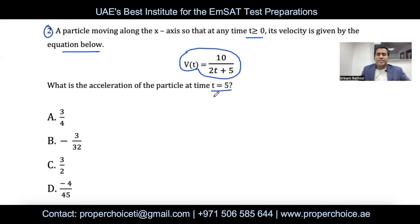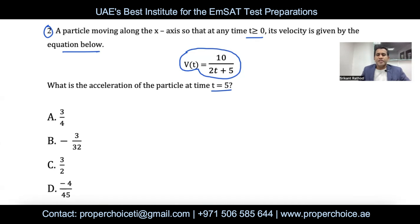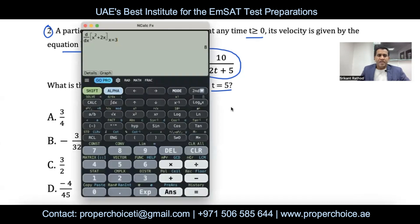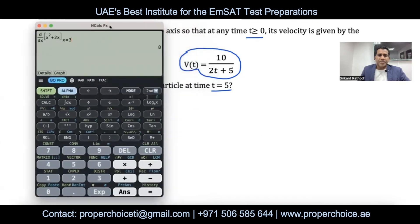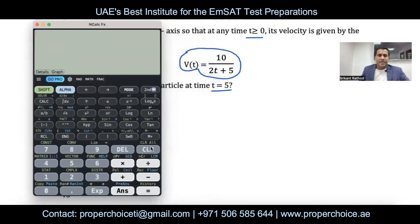At t = 5, it's just a matter of using the calculator, the same way we did previously. Type the velocity function and evaluate its derivative at t = 5 to get the acceleration. Remember: velocity → acceleration requires differentiation; the reverse, acceleration → velocity, requires integration.